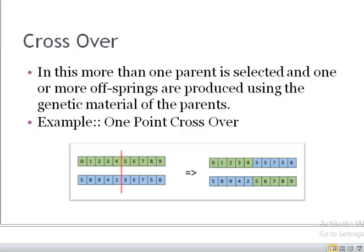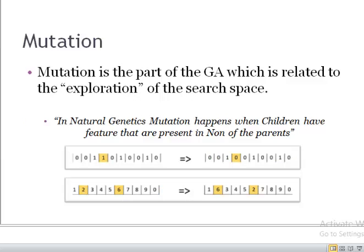After crossover we have a new set of solutions, which then go through mutation. Mutation is the part of genetic algorithm related to the exploration of the search space. Without mutation we would get stuck in a local optimum. In the absence of mutation, the search would only depend on the starting randomly initialized population, because the children would contain exactly the same genetic material as their parents.